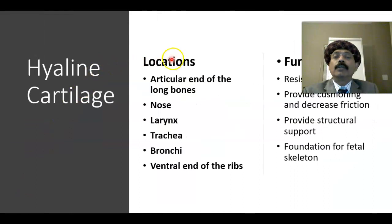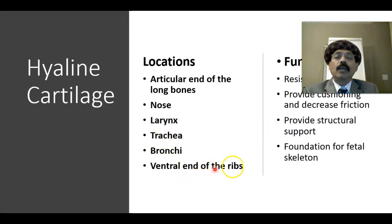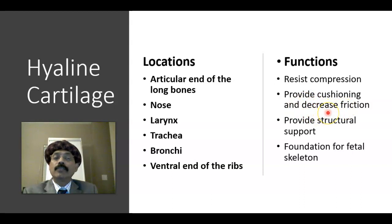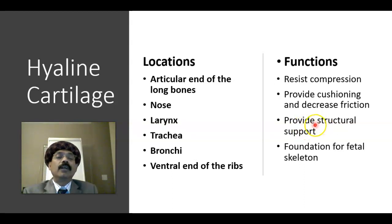The locations of hyaline cartilage include the articular ends of long bones, the nose, larynx, trachea, bronchi, and the ventral ends of the ribs. The functions are to resist compression, provide cushioning and decrease friction, provide structural support for the trachea, nose, and respiratory passage, and hyaline cartilage also forms the foundation for the fetal skeleton.